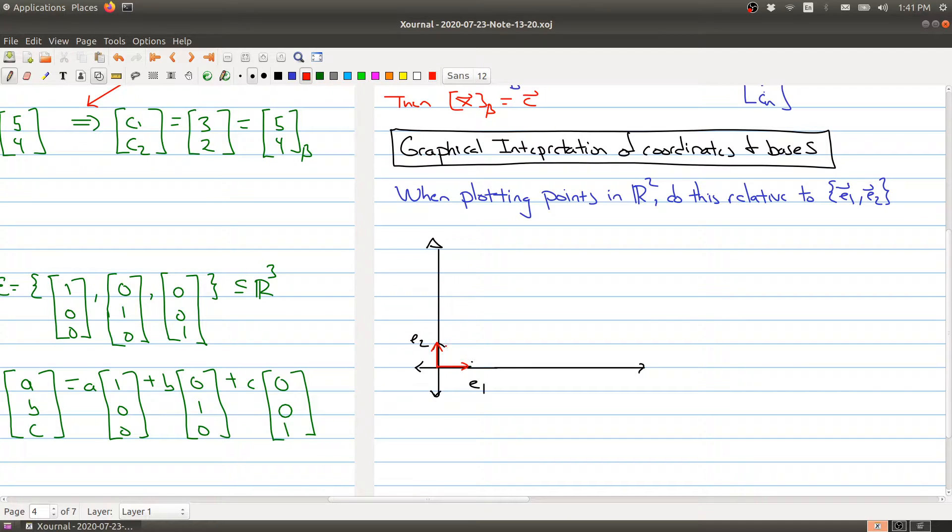So I've drawn E1 and E2. And I should probably have graph paper here. But E1 and E2 define a grid. And this is kind of poorly drawn here.